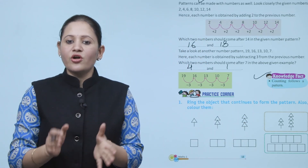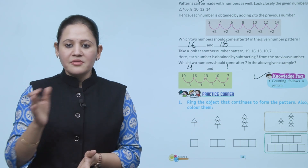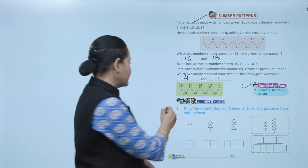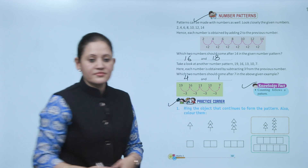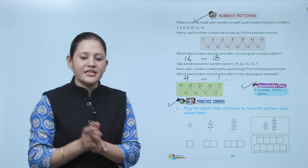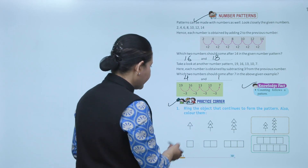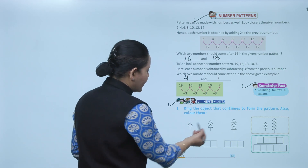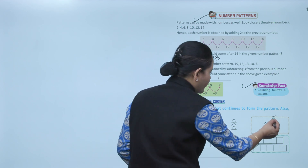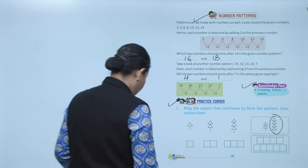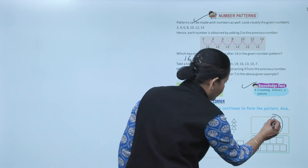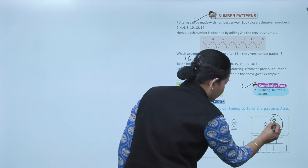Counting follows a pattern — counting makes that pattern. Practice corner: ring the object that continues to form the pattern, and also color it. Here: one triangle, then two, then three, then four triangles — color them like this.